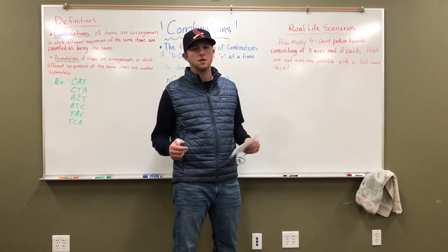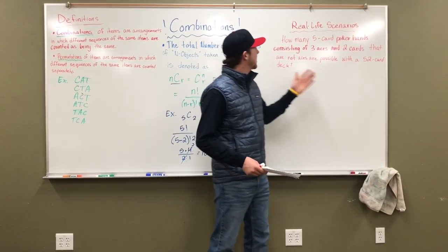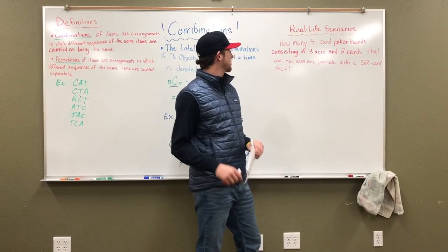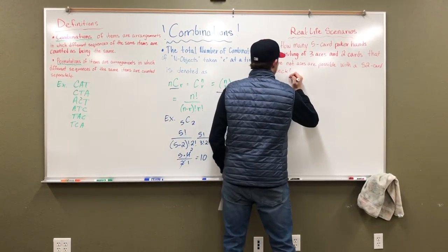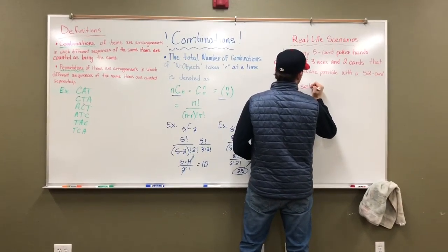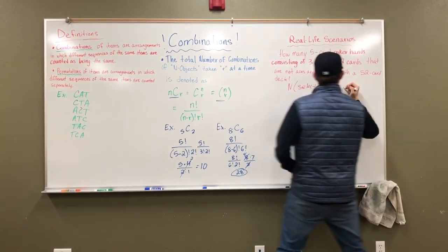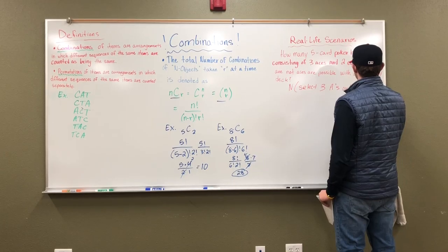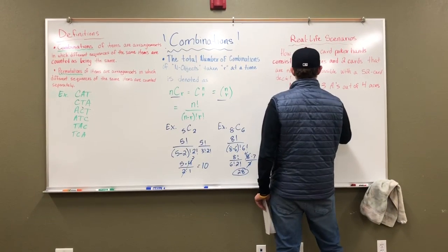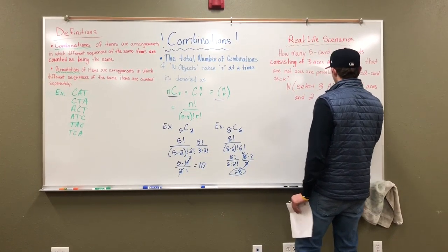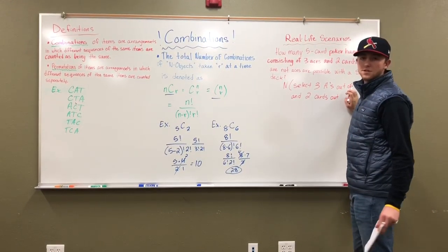How many five card poker hands consisting of three aces and two cards that are not aces are possible with a 52 card deck? So now we're looking at that. We know it's to select three aces out of four aces and two cards out of 48 because we're taking out the four aces from the 52 card deck.